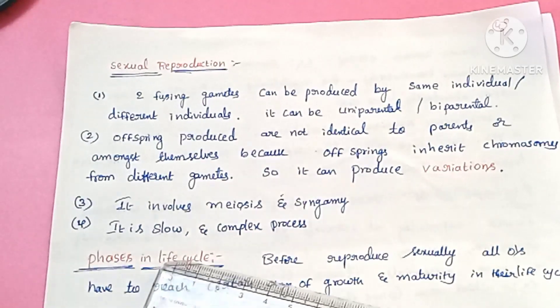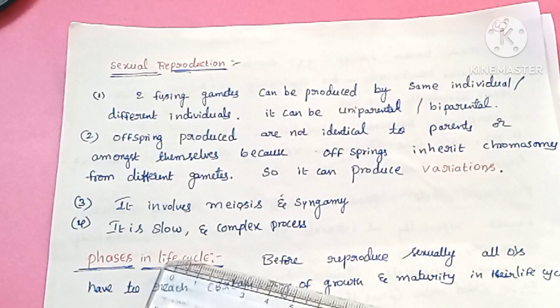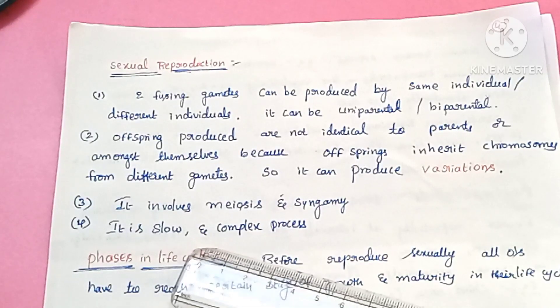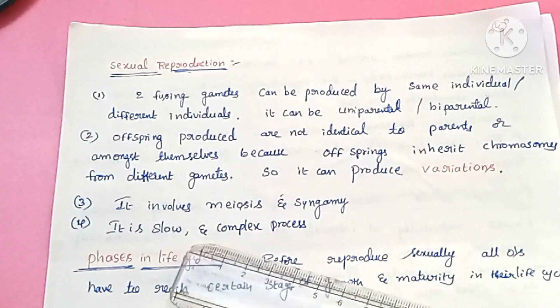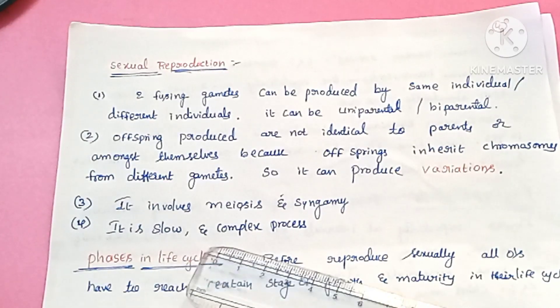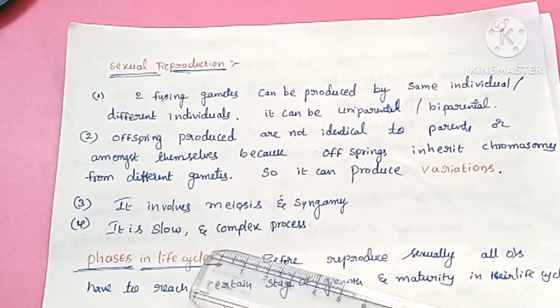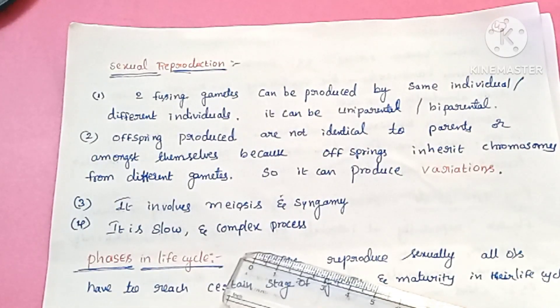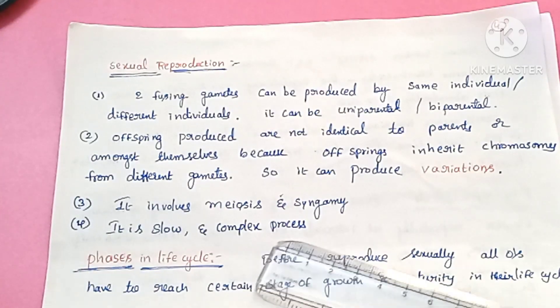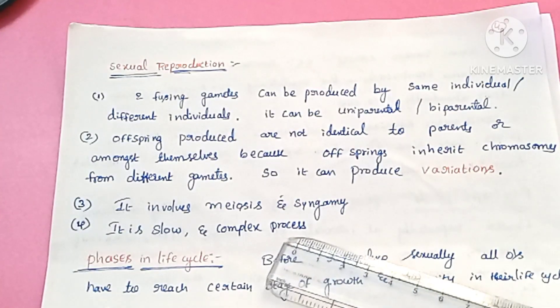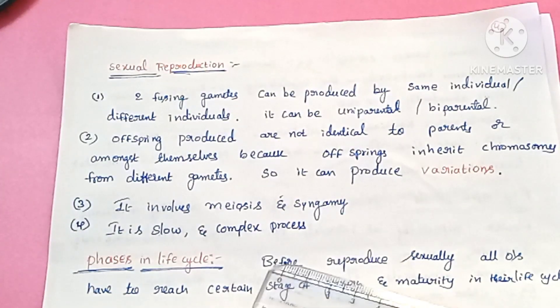Sexual reproduction is a very slow process. It is a slow, elaborate, and complex process — unlike asexual reproduction which is rapid.